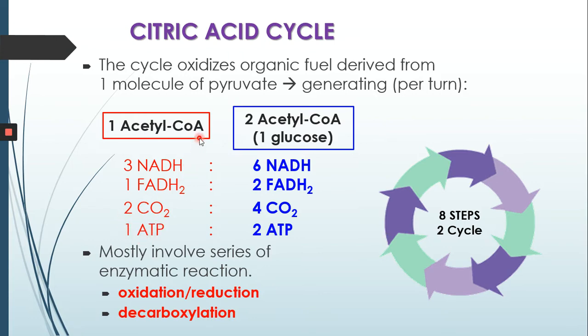Because we have two molecules of acetyl-CoA from the link reaction, to complete the full breakdown of glucose, two turns of the citric acid cycle will produce six NADH, two FADH2, four carbon dioxide, and two ATP. CAC mainly involves a series of enzyme-catalyzed reactions including oxidation, reduction, and decarboxylation.